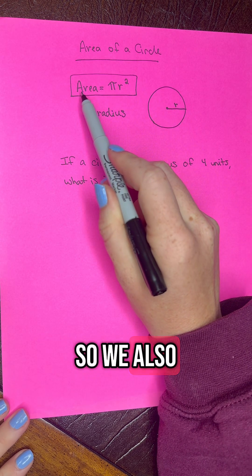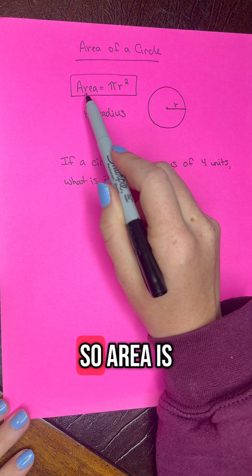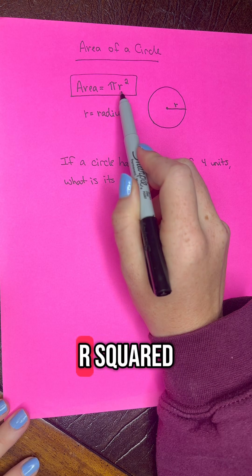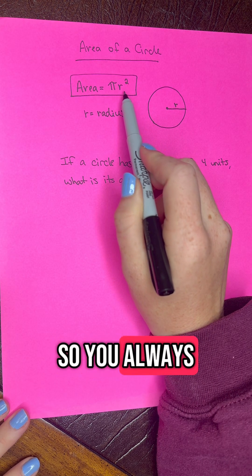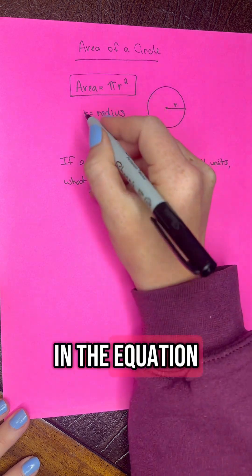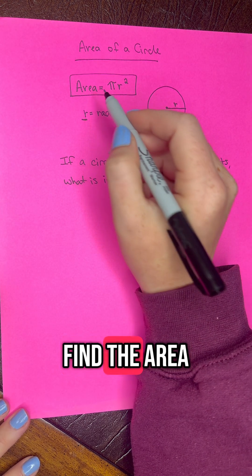We also need to know the area formula for a circle. Area is equal to pi r squared. You always want to know what the radius is, which you'll see in the equation as r, in order to find the area.